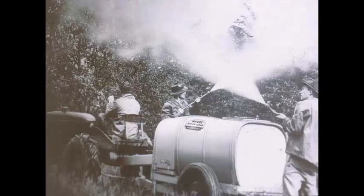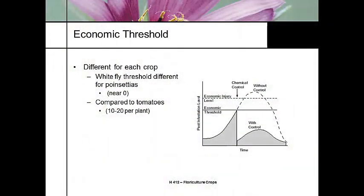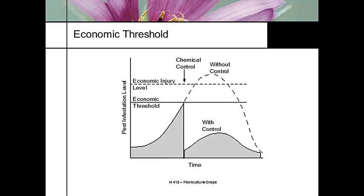This picture is from Dick Lindquist, retired from Ohio State University, and he always started every one of his presentations with this shot of how to apply DDT. We talked about economic thresholds two weeks ago — the economic threshold is going to be different for every crop. For poinsettias, the whitefly threshold is virtually none, whereas on a greenhouse tomato crop you can tolerate quite a few more. So the economic threshold depends on the crop and the pest you're looking at.